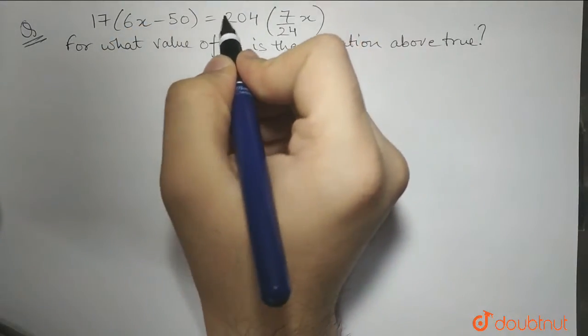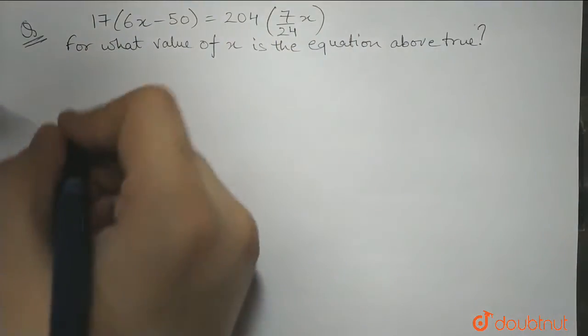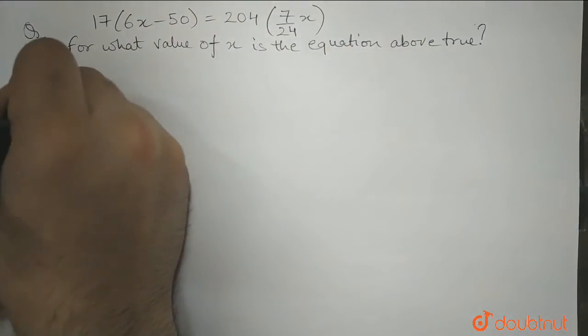Alright, so yes indeed, 204 is divisible by 17. As 17 times 12 is equal to 204. So let's rewrite the equation,